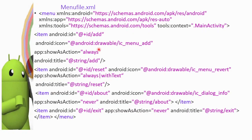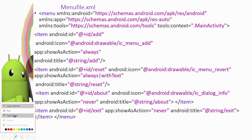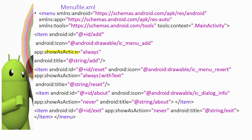This menu file is inflated into the action bar. The key reason is the showAsAction attribute. showAsAction can take different values — we have three main values: first is 'always', then 'always with text', and then 'never'.